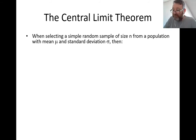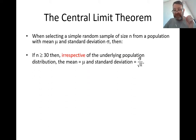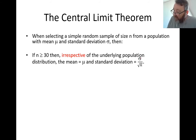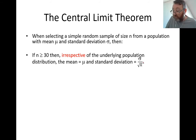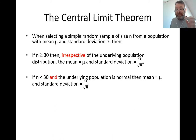This is the Central Limit Theorem. When selecting a simple random sample of size n from a population with mean μ and standard deviation σ: if the sample size is greater than 30, the standard deviation becomes σ divided by the square root of n. If the sample size is less than 30 and the underlying population is normal, the standard deviation of the sample is exactly the same formula — σ over √n.